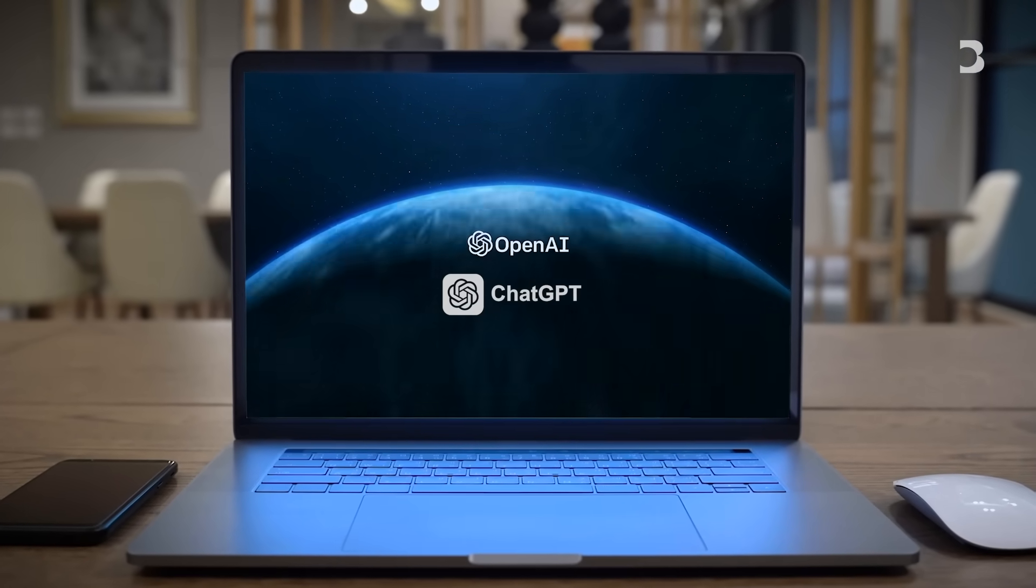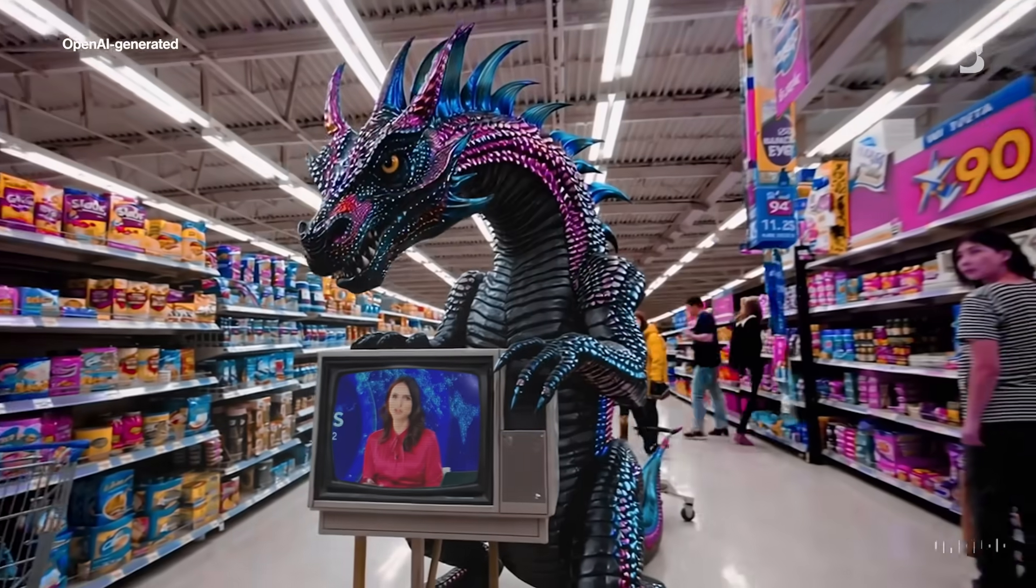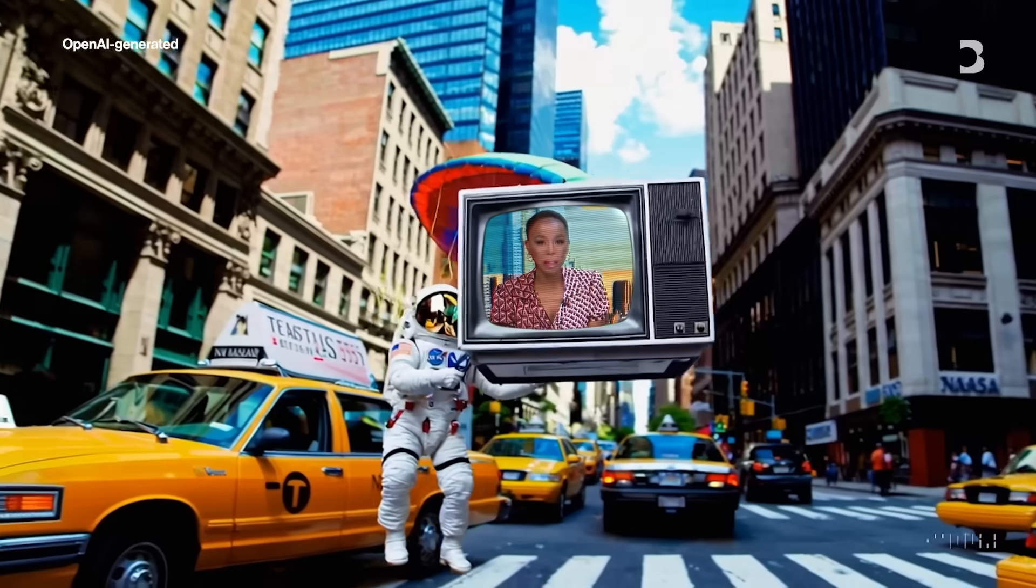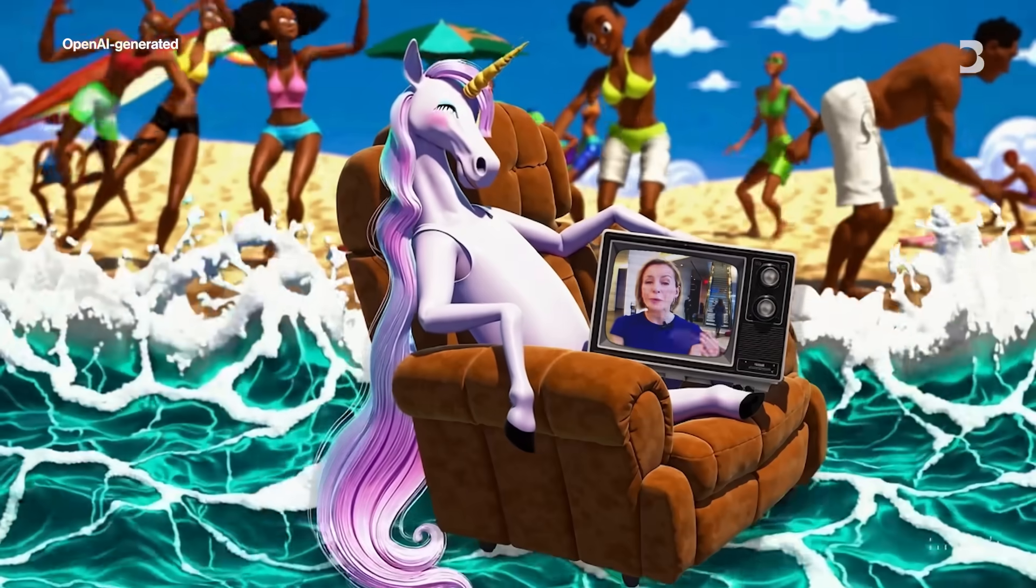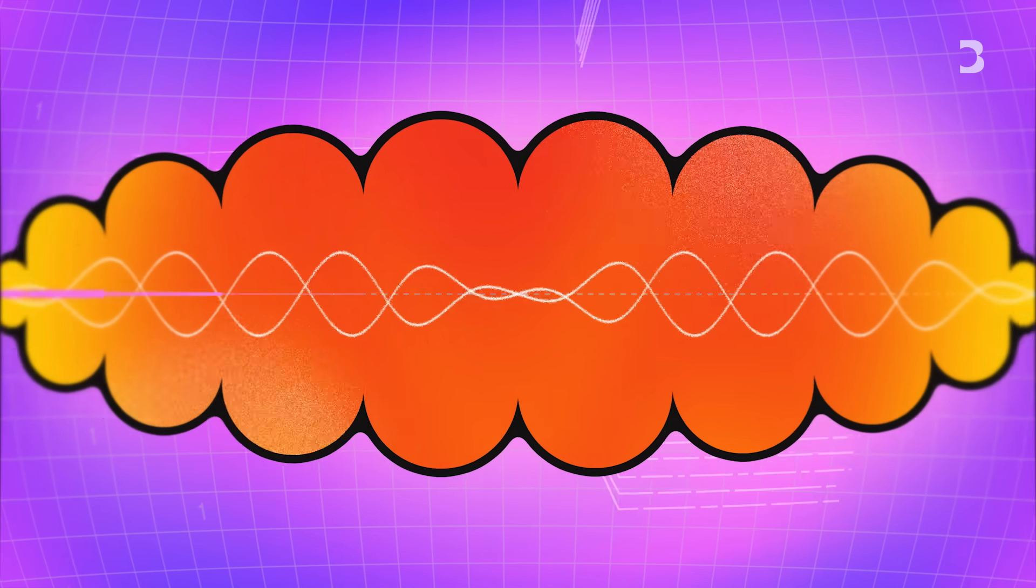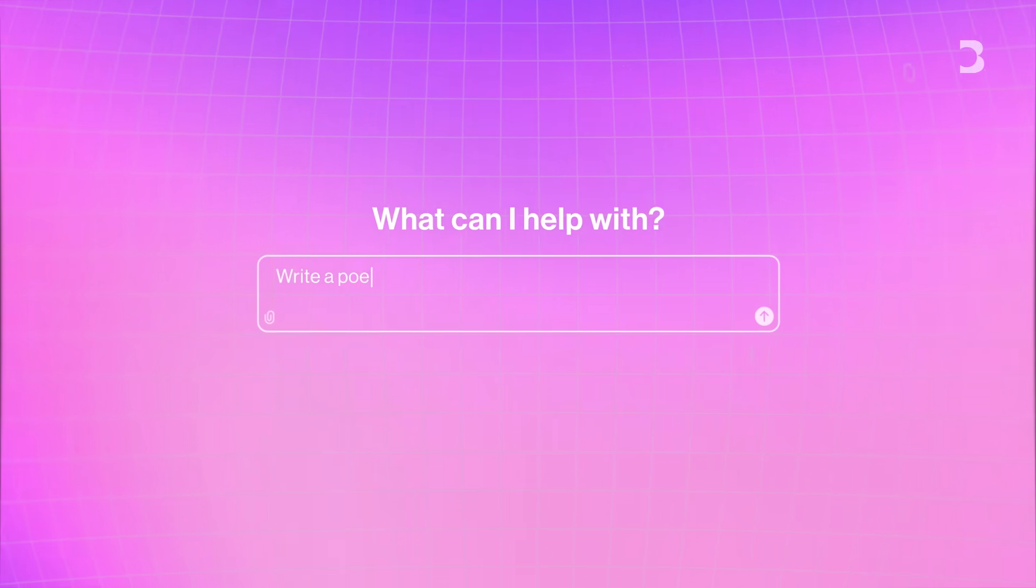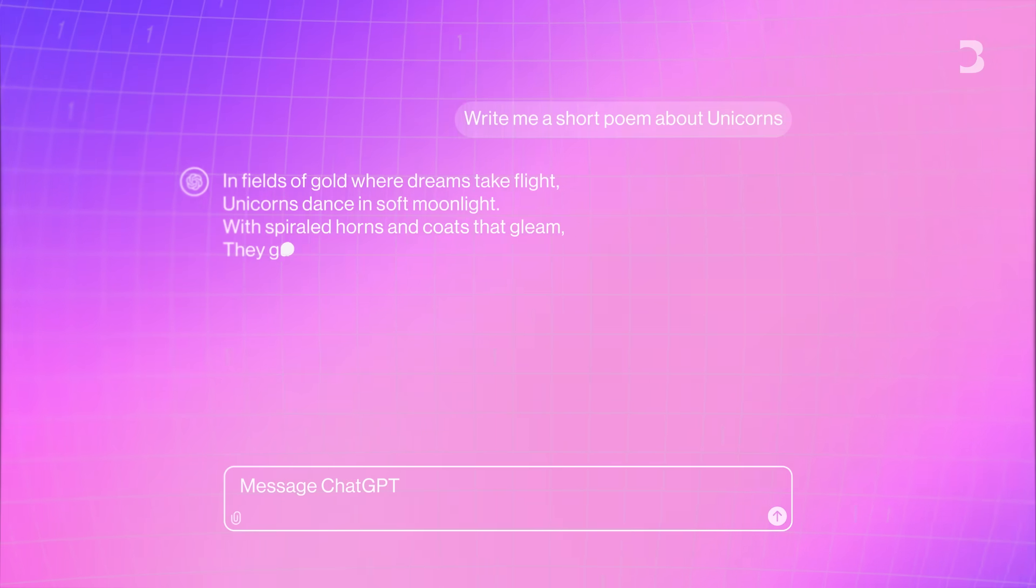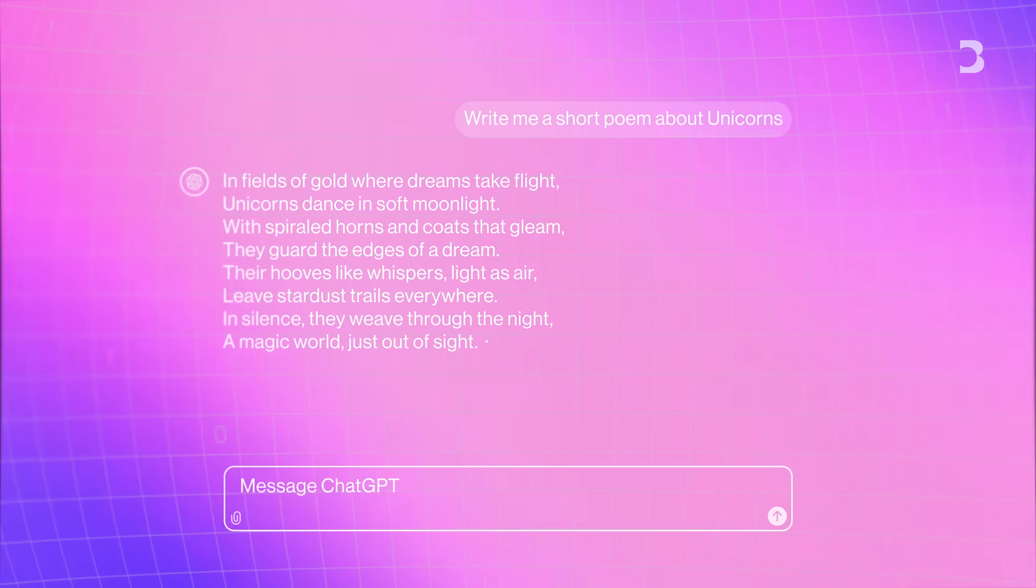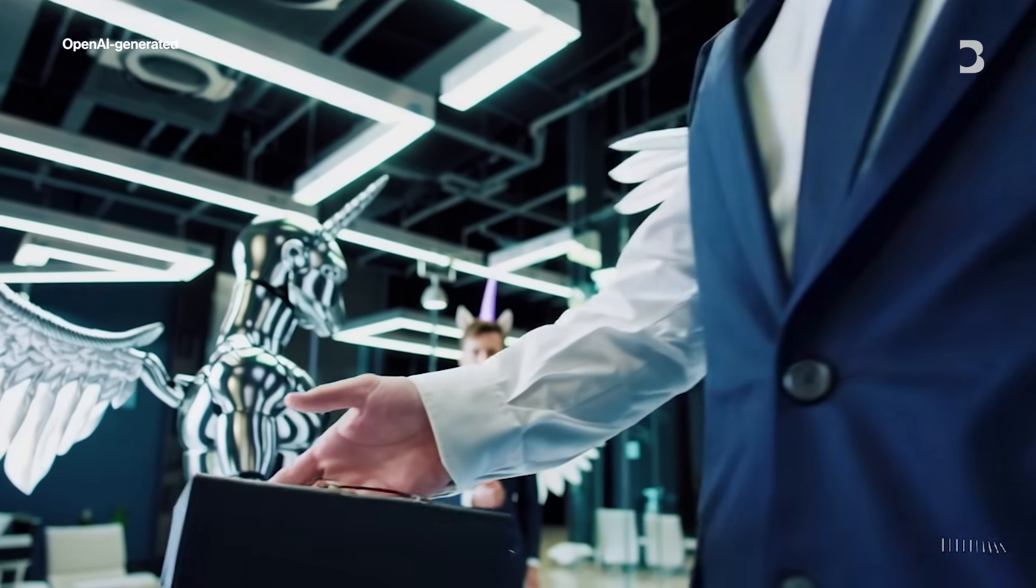It broke the internet overnight. A new artificial intelligence tool is going viral. It's called ChatGPT. It can answer follow-up questions, admit its own mistakes. When ChatGPT came out, it really quickly gained traction. You might ask it to write a poem about unicorns, and it might spit out something that sounds just like it was written by someone. That really struck a chord with a lot of people. It also struck a chord with investors.